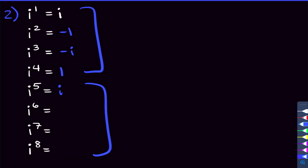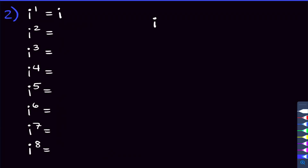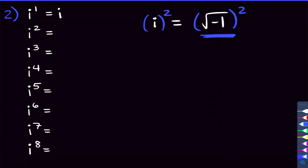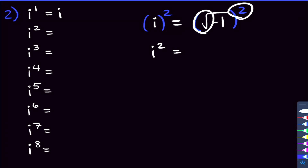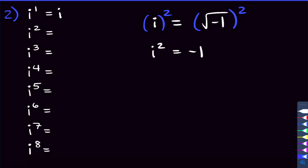Let me show you why this happens. We know i is the square root of negative 1. To find i squared, we square both sides of that equation. On the left we get i squared; on the right, the square cancels the square root, leaving just negative 1. That is why i squared equals negative 1.